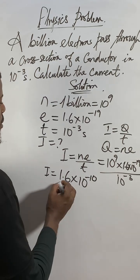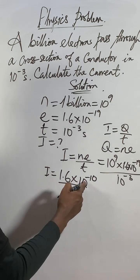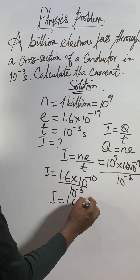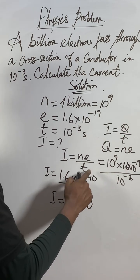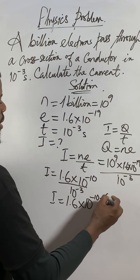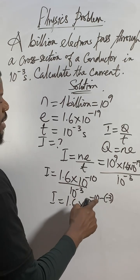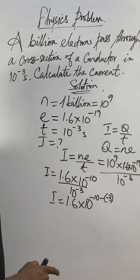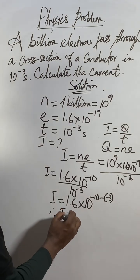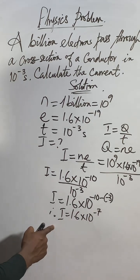If it's minus 10, divide by 10 to the power of negative 3 using division law of indices. I will equal 1.6 times the common base, and for the power subtract: negative 10 minus negative 3. Negative negative is positive, so negative 10 plus 3 gives negative 7. Therefore I equals 1.6 times 10 to the power of negative 7, with unit ampere.